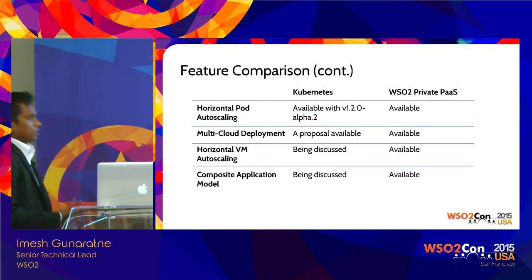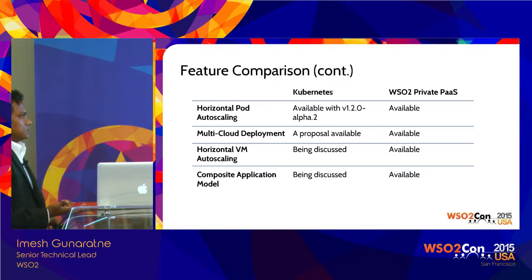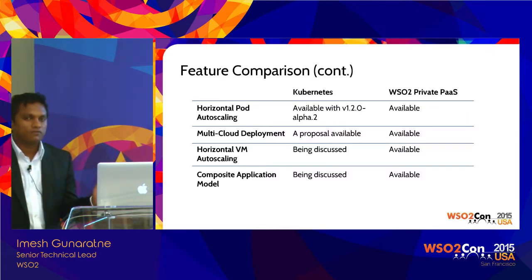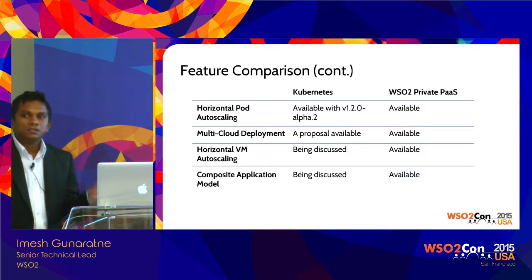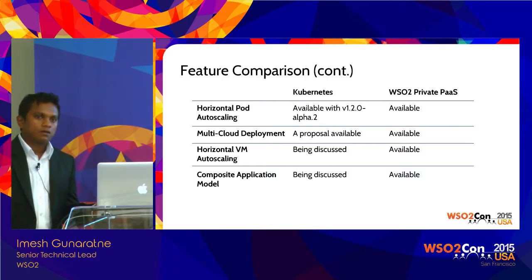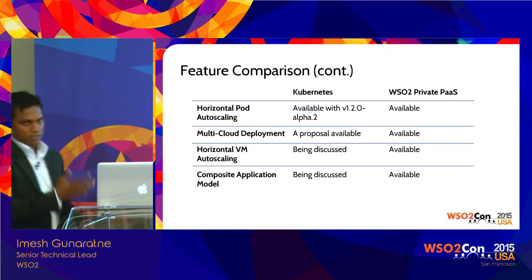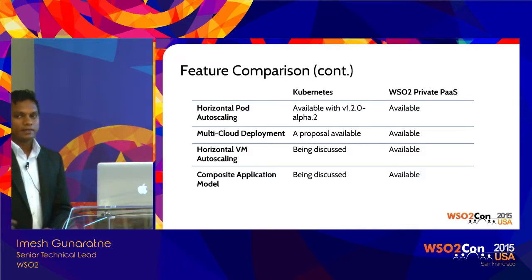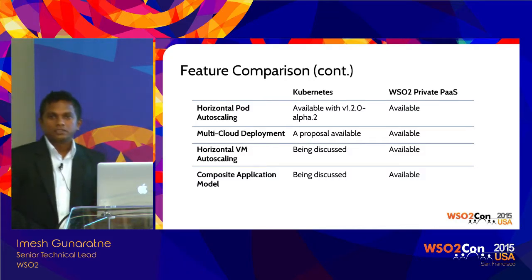For multi-cloud, the Kubernetes cluster federation proposal is there to implement it. For horizontal auto-scaling of VMs: even with containers, if you run a fixed number of hosts for the Kubernetes cluster you'll waste resources on idle hosts, so you need to auto-scale the Kubernetes hosts as well — removing nodes when load is idle. The composite application model is currently available in Private PaaS as described, and it's also being discussed in Kubernetes; communities like Red Hat have implemented it in a project called Atomic.